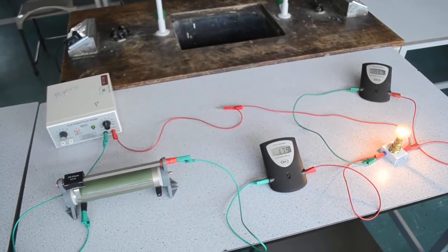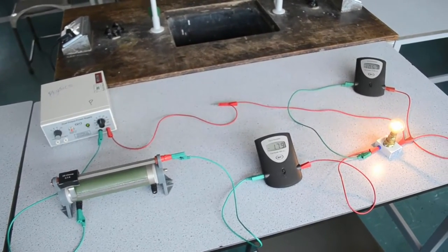We can then plot that data onto a graph and that will give us our IV characteristic for the light bulb.